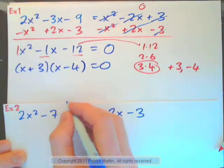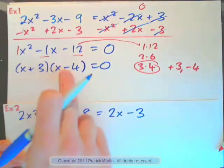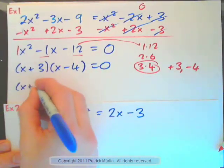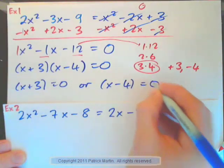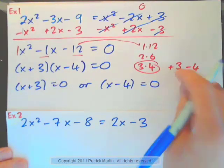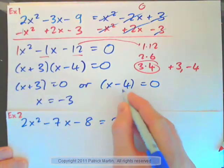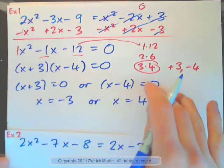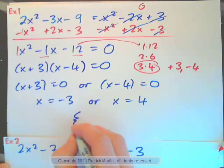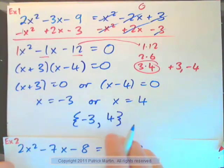Solve that. So we need to use the zero product rule. This time this is zero. That means the x plus 3 is zero, or x minus 4 is zero. Subtract 3 from both sides, x is negative 3. Add 4 to both sides, x is positive 4. So the answer as a solution set: negative 3 comma positive 4. Two solutions.